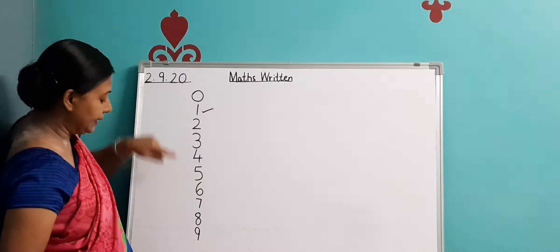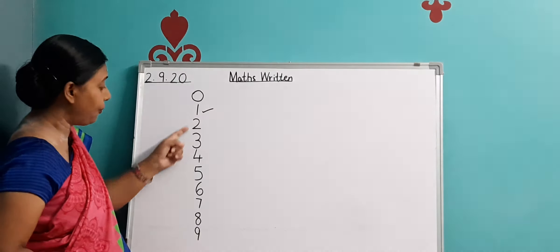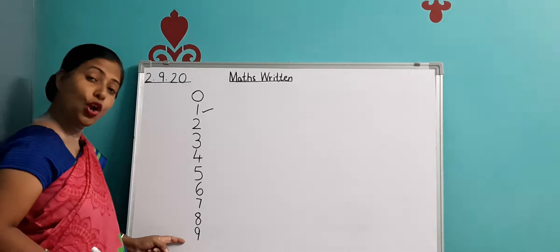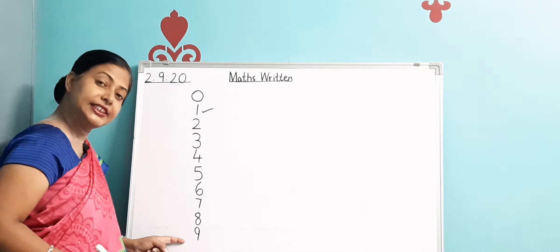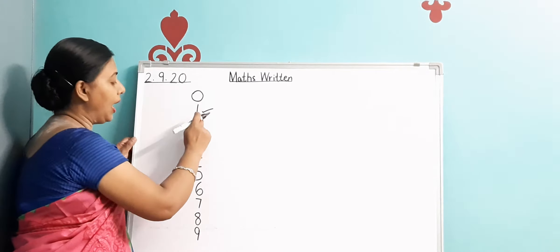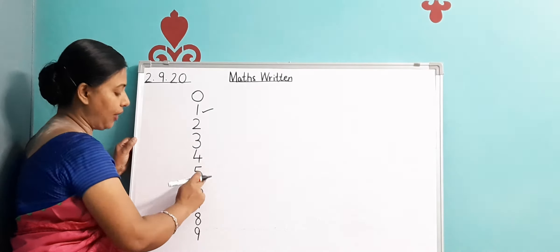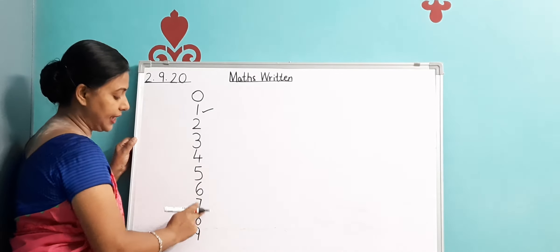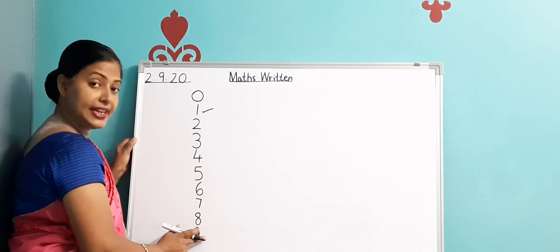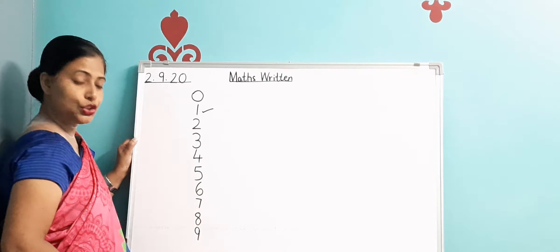From 1 to 9, these all are single digit numbers. 0, then 1, 2, 3, 4, 5, 6, 7, 8, 9 — this is 9. So from 0 to 9 we have single digit numbers.